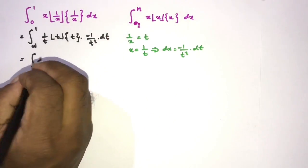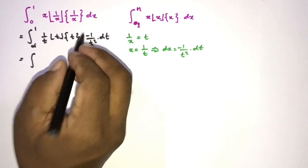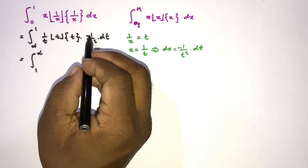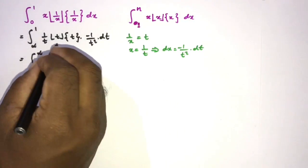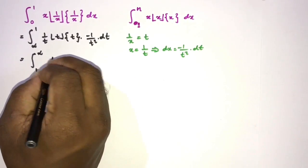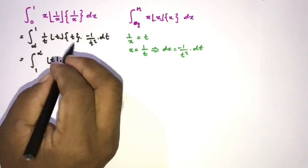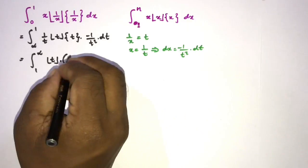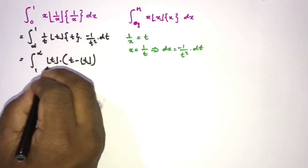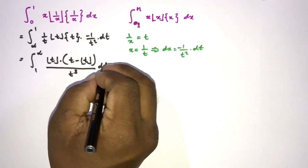We change the boundaries — accounting for the minus sign, the limits become 1 to infinity and the minus sign cancels when we swap the limits. Now we have ln(t) times the fractional part of t. Since the fractional part of t equals t minus floor(t), the integrand becomes ln(t)·{t}/t³ dt.